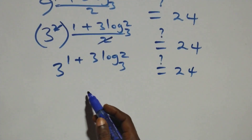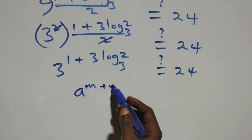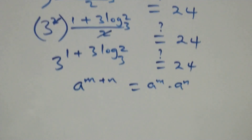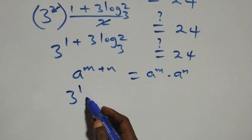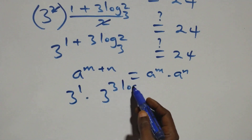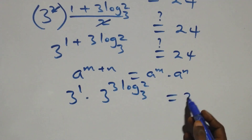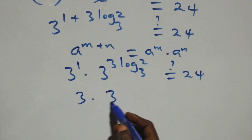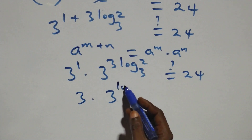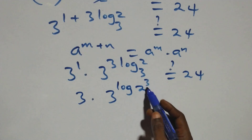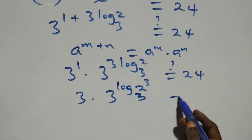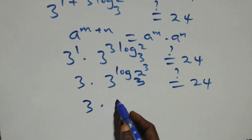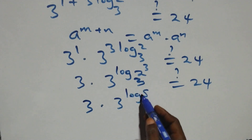We apply the law of indices: a raised to the power m plus n is the same as a raised to the power m times a raised to the power n. So this becomes three raised to the power one, times three raised to the power three log two base three. Three raised to the power one is three, then times three raised to the power log of two cubed, base three. Does this equal twenty-four?